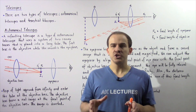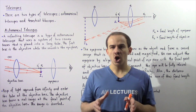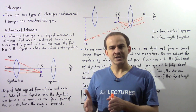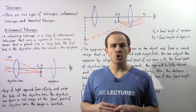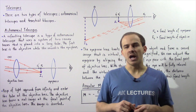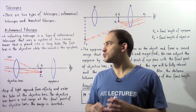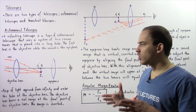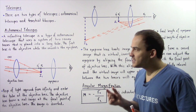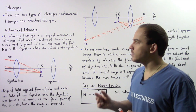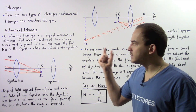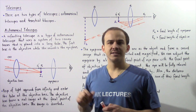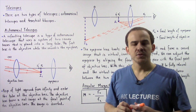For example, when you're watching an opera or a show, you can use a terrestrial telescope to observe the people on stage. In this lecture, we're going to discuss a specific type of astronomical telescope known as a refracting telescope.